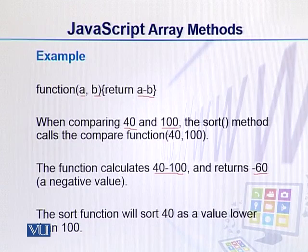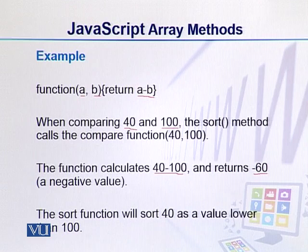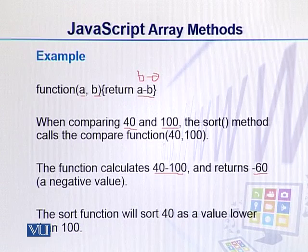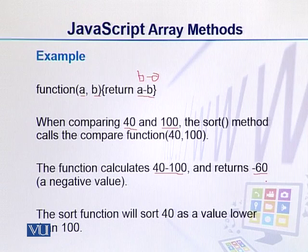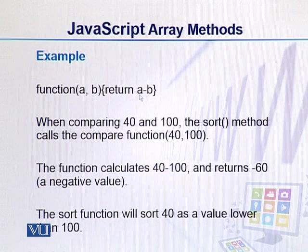If we want to sort in reverse order - descending order - we can simply change B minus A. So when we have 40 and 100, the result will be positive 60. When we have a positive value, the first argument is considered the higher number. In this way, we can modify our compare function to achieve any desired sort order.